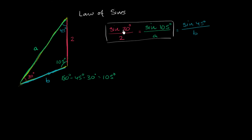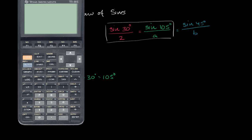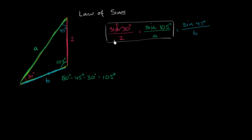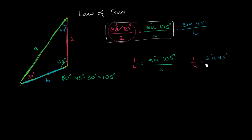So if we wanted to figure out A, we could solve this equation. What is the sine of 30 degrees? From your unit circle or 30-60-90 triangles, that's one half, or 0.5. So this is going to be equal to one half over two, which equals one fourth. That gives us one fourth is equal to sine of 105 degrees over A.